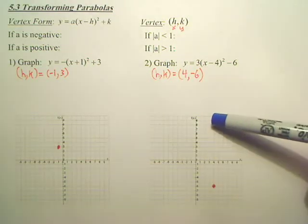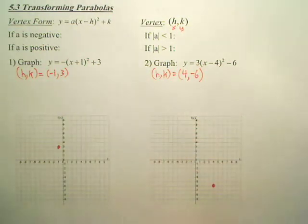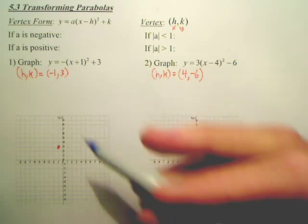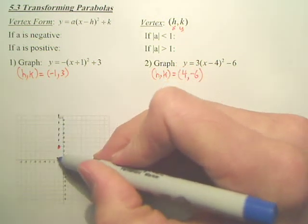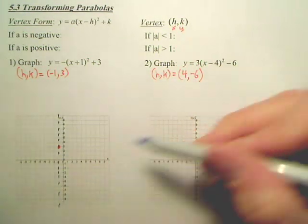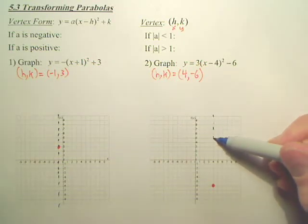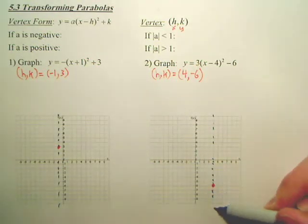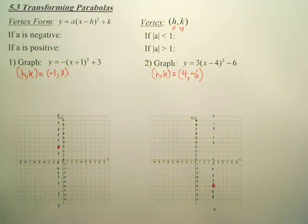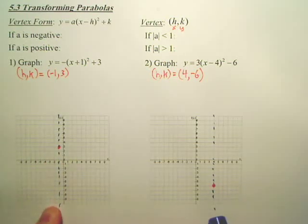Now, do you guys understand there's a line of symmetry going down the middle of these dots? Hopefully you understand the line of symmetry is going to be going down the middle of these dots, because it's always on the vertex. You guys okay with that? You don't have to put the line of symmetry, per se. It's just nice to see it. So, we have a vertex. We have a line of symmetry.